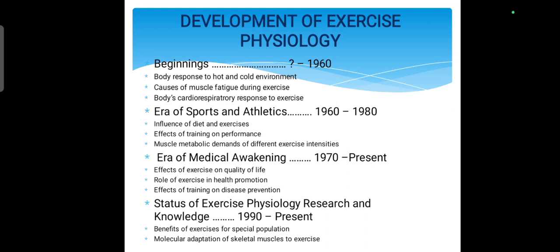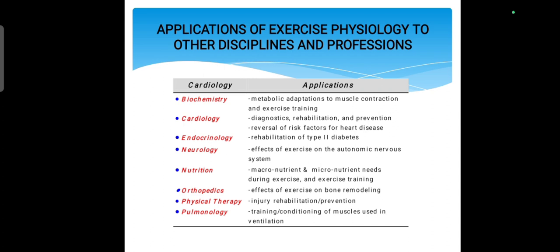Regarding the history of exercise physiology — how it developed and started: initially people began exercising in different environments with varying cold and warm conditions, studying cardiorespiratory responses. In the 1960s, the development of exercise physiology formally began. Then sports and athletics became a focus, followed by the medical and therapeutic role of exercise.